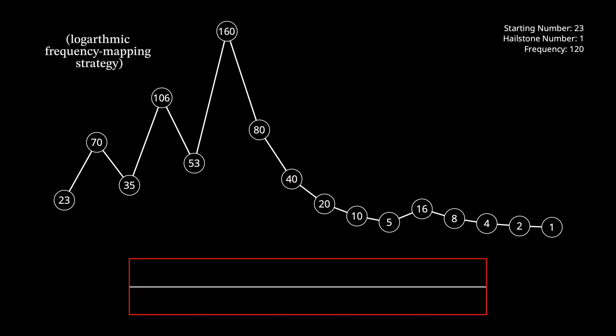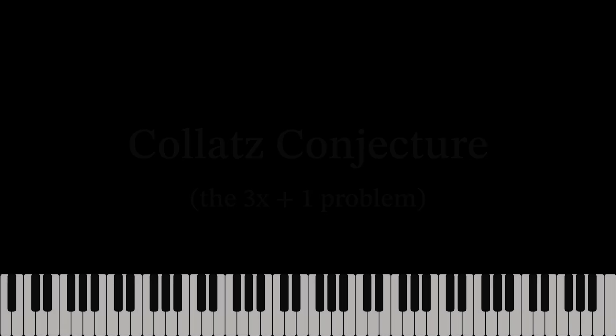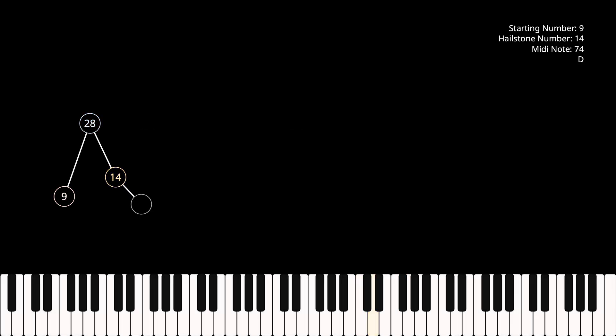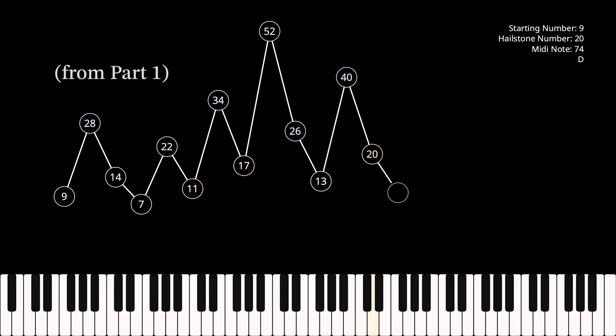In part 1, we used sequences from the Collatz conjecture, also known as the 3x plus 1 problem, to generate sequences of MIDI notes with a variety of strategies for mapping the sequences into notes.